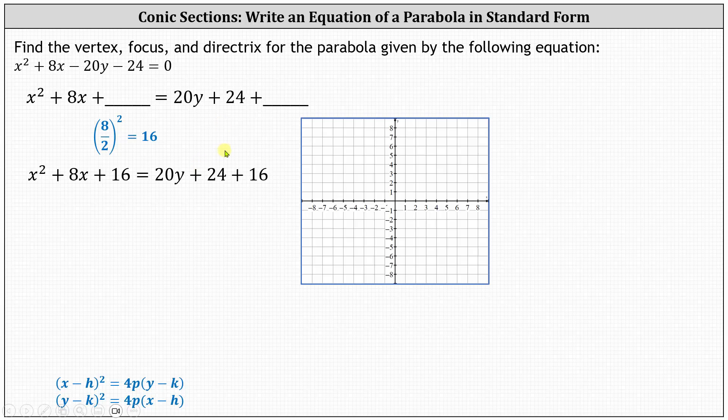And now we simplify and factor. On the left, we have a perfect square trinomial. The factors of 16 that add to eight are four and four, giving us two factors of x plus four. On the right, simplifying, we have 20y plus 40. And now we can factor 20 from the right, which gives us the square of x plus four equals 20 times the quantity y plus two.